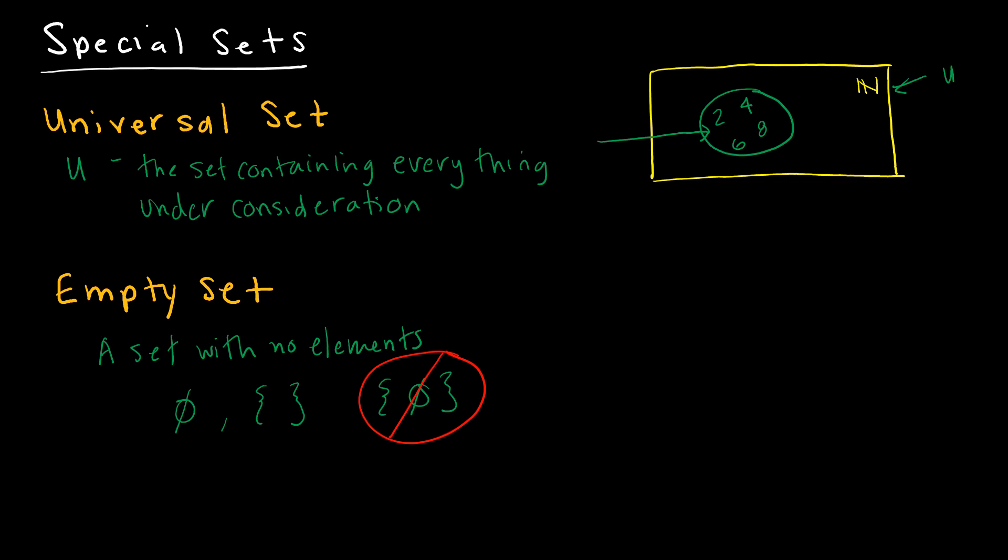These are the two ways that we might denote an empty set. So if I was looking at the universe, which is the set of natural numbers in this case, then an empty set would be the negative numbers because there are no negative natural numbers.